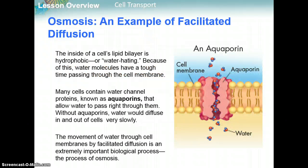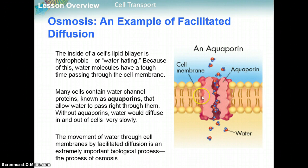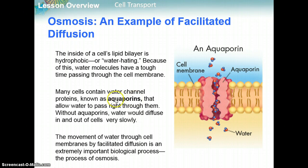An example of facilitated diffusion is osmosis — the movement of water across the membrane. The inside of the cell's lipid bilayer is hydrophobic, meaning it repels water, so water molecules have a tough time passing through the cell membrane. Many cells contain channels called aquaporins — 'aqua' like water, 'porin' like a pore, so a water pore — that allow water to pass right through them. Without aquaporins, water would not easily diffuse in and out of a cell. The movement of water through cell membranes by facilitated diffusion is osmosis, an extremely important biological process.